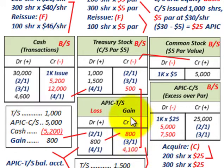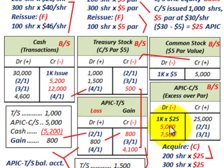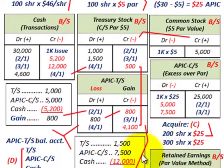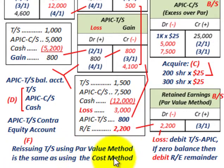That takes care of both acquiring and reissuing treasury stock. Remember: you have to deal with the common stock's par value, and additional paid-in capital for common stock gets reduced when you acquire treasury stock. Also remember: reissuing treasury stock using the par value method is the same as using the cost method.